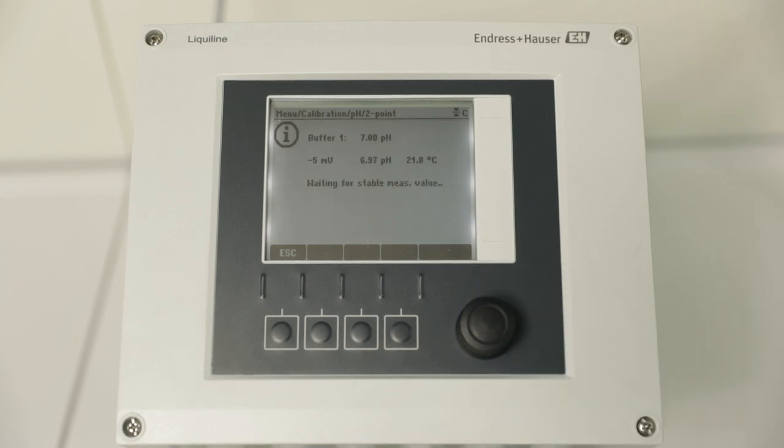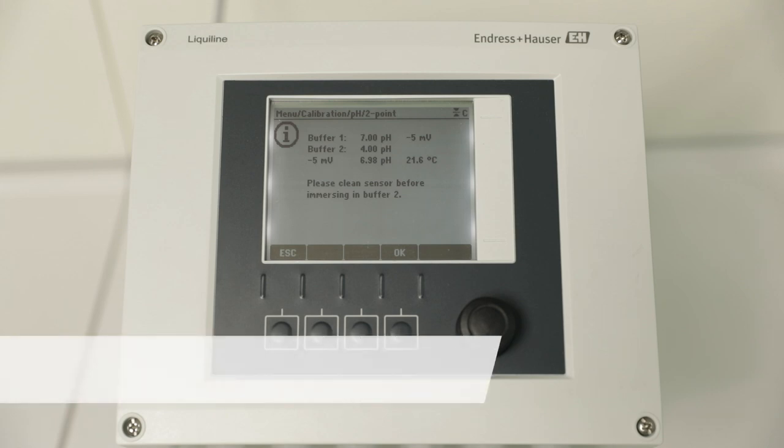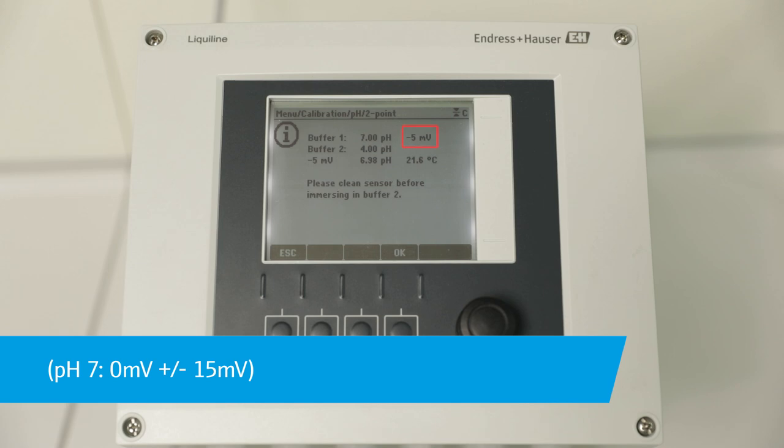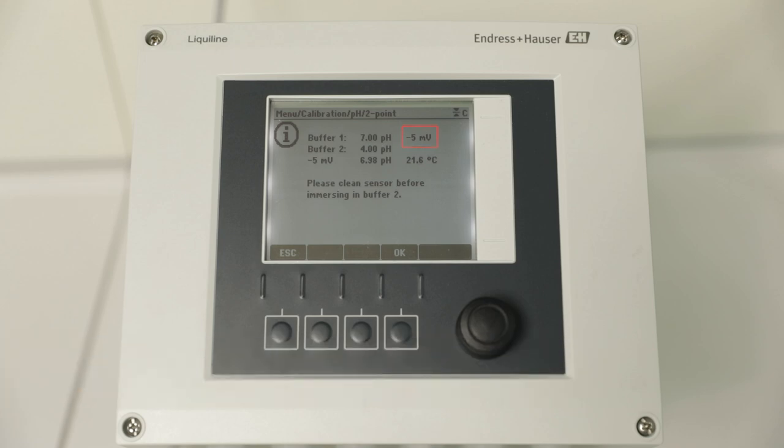The instrument waits now for a stable measurement value. If this is given, the value is taken over automatically. Check the display raw value. For a buffer with pH 7, it should be around 0 mV plus or minus 15 mV for a new pH sensor.